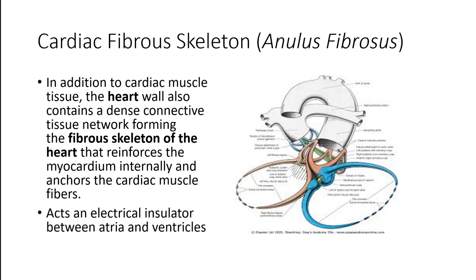Next we'll review the annulus fibrosis. People often knock the notion that the heart is a muscle because it doesn't have an origin and insertion. While it's true it doesn't have a skeletal attachment, it does actually have one contained within itself. It has this fibrous skeleton — the annulus fibrosis — which is a thick, dense connective tissue that insulates the conduction system as well as the space between the atria and ventricles, and helps reinforce the myocardium. So the heart actually does have an origin and insertion of sorts within itself.